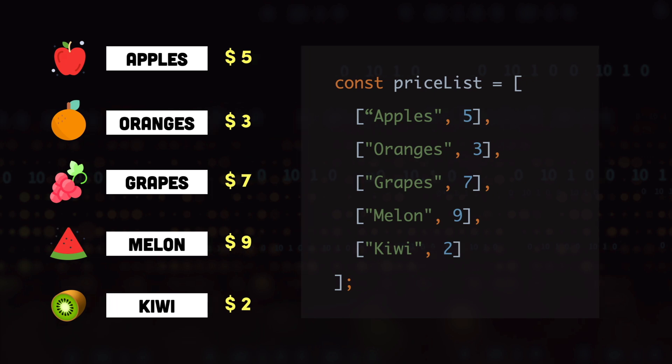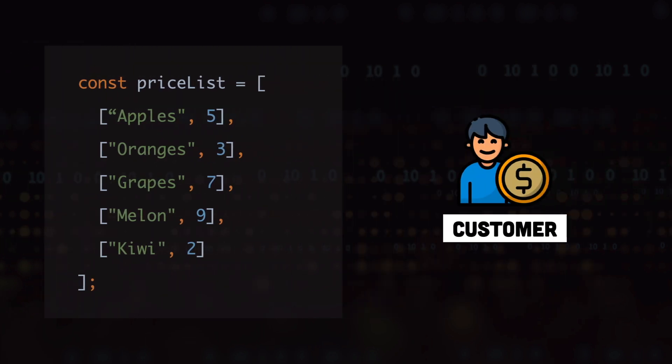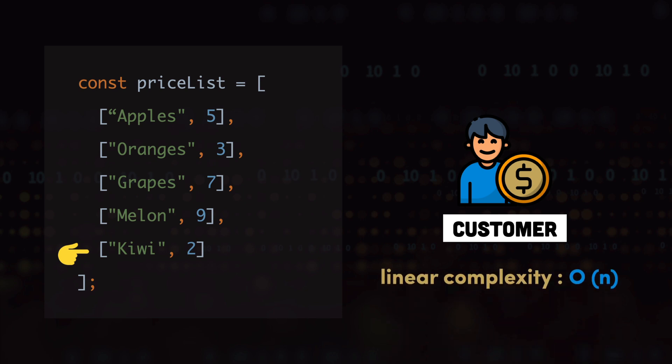Now imagine a customer comes in and asks for the price of kiwi. To get that price, we will have to go through all the items of the array to find the fruit we are looking for, and once we find that fruit we will be able to get the price. The algorithmic complexity of finding the price from the array is going to be linear.